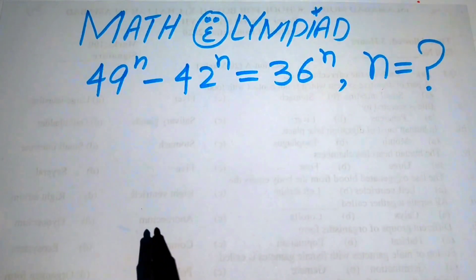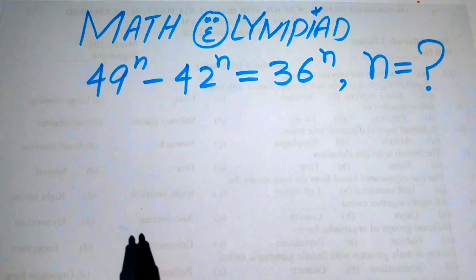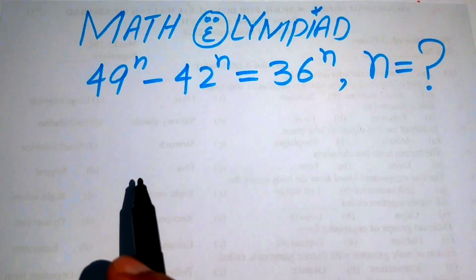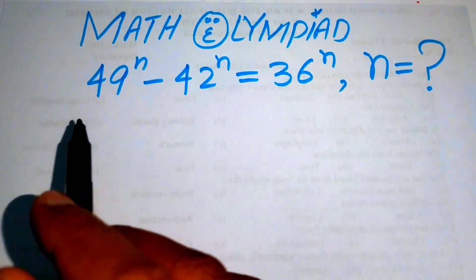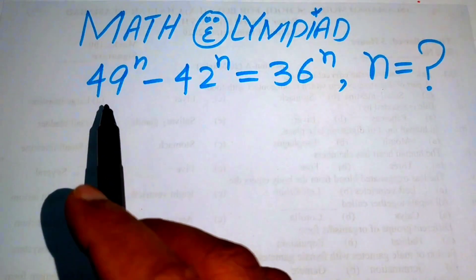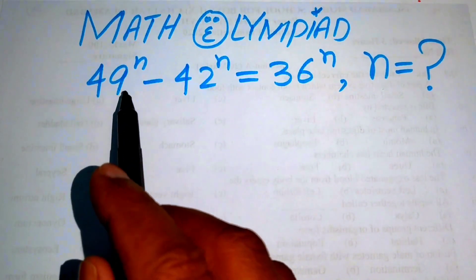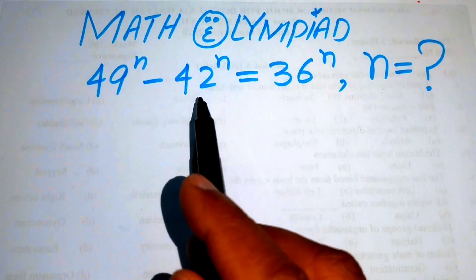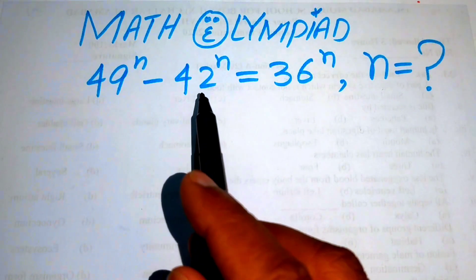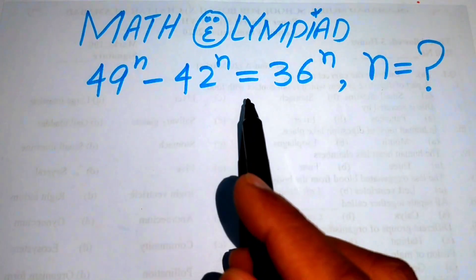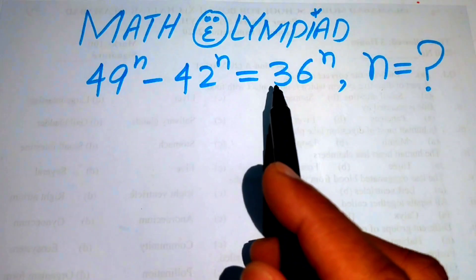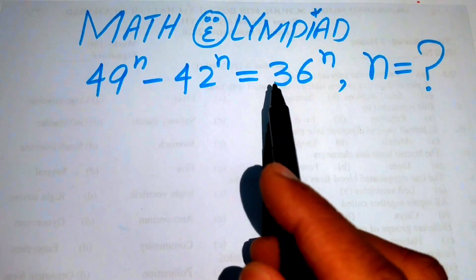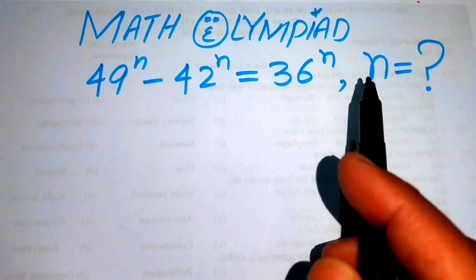Hello everyone, welcome back to the Map of Mathematics. In this video we are going to solve this nice math exponential problem. We have 49 to the power of n minus 42 to the power of n equals 36 to the power of n, and we need to find the value of n.